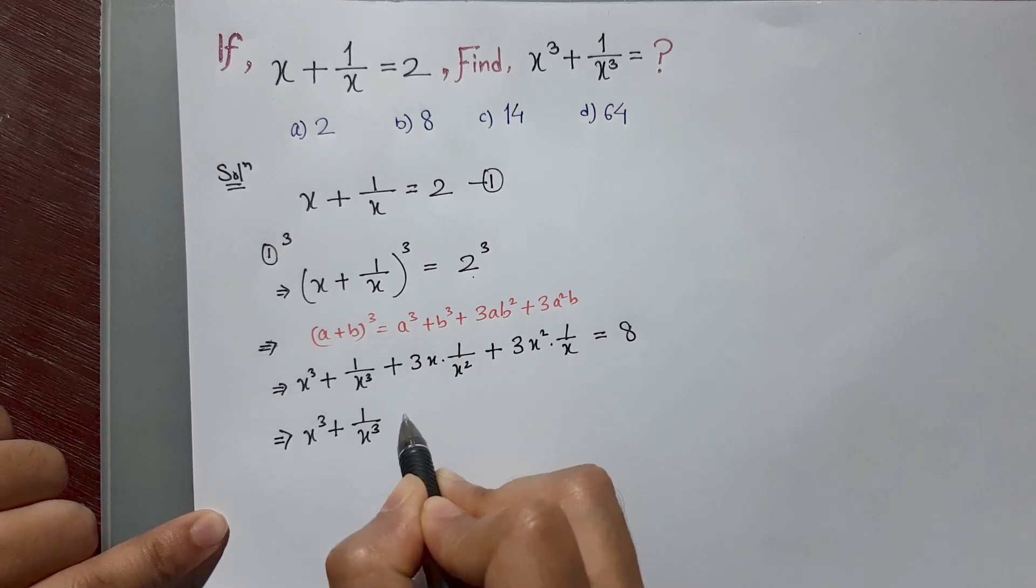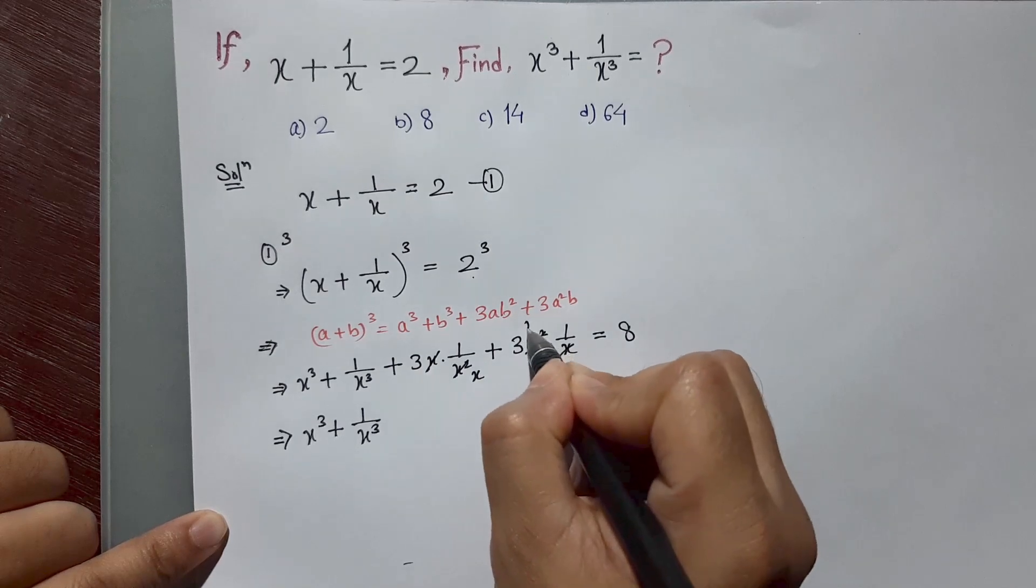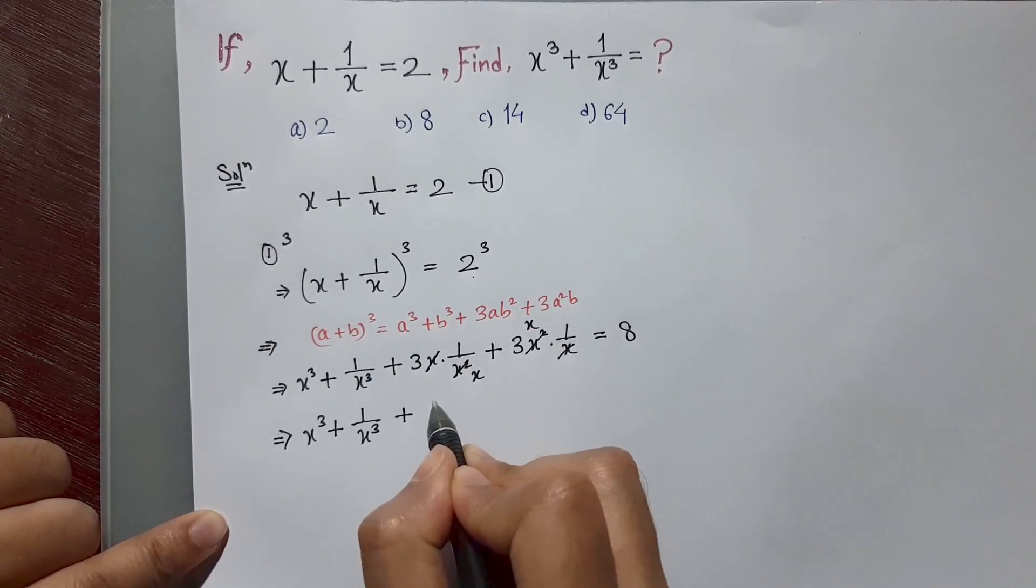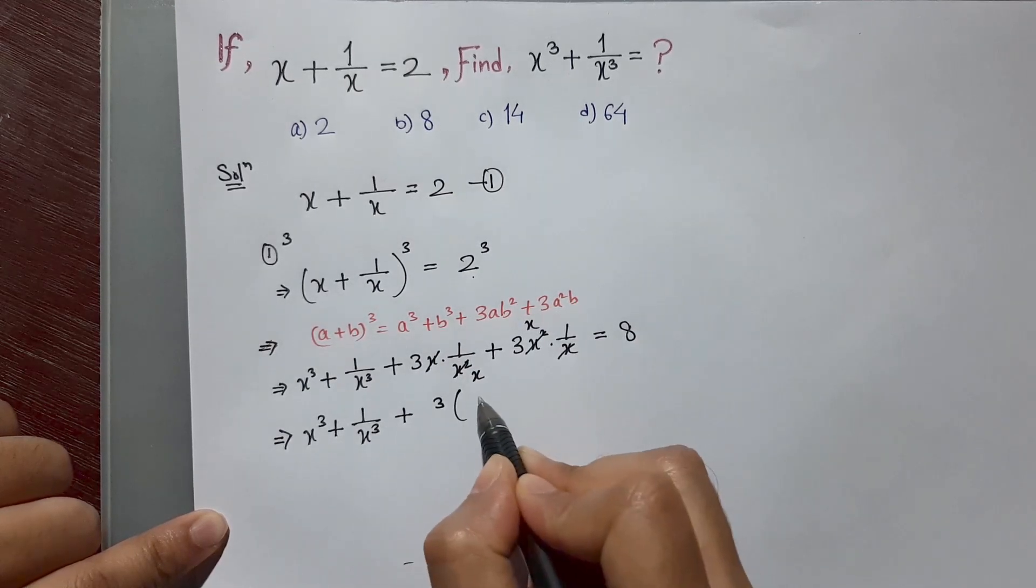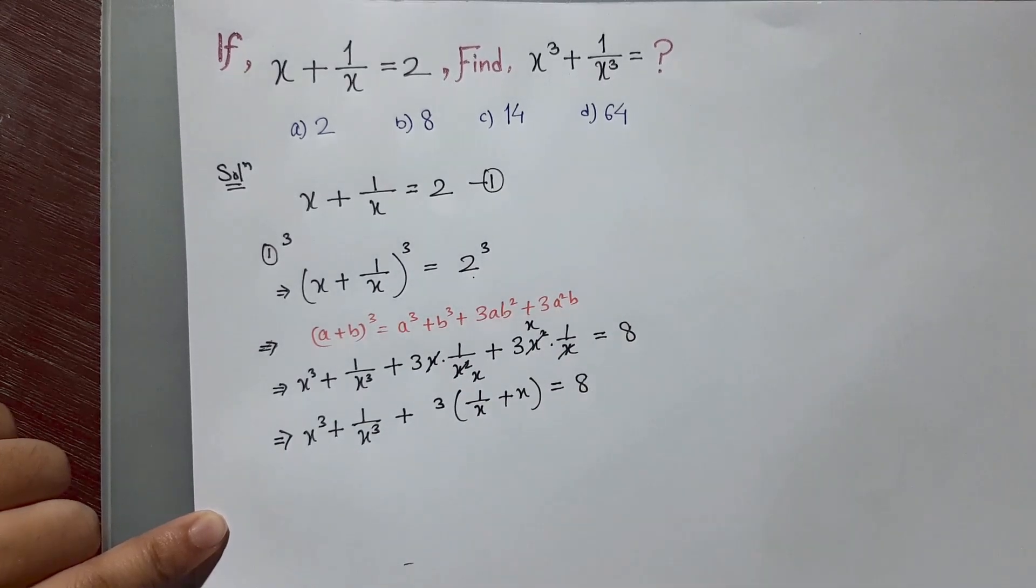Here you can cancel out 1 x, here you can cancel out 1 x. So we can take common 3, so we have x plus 1 by x, and this is equal to 8.